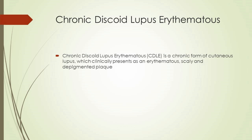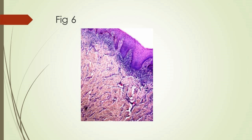Chronic discoid lupus erythematosus (CDLE) is a chronic form of cutaneous lupus presenting as erythematous, scaly, and depigmented plaques. The head and neck area is affected in 41% of all cases. Oral lesions show symmetrical distribution affecting the palate, buccal mucosa, and tongue. The buccal mucosa can be affected in 15% of patients and may transform to leukoplakia. Macroscopic features include hyperkeratosis, degeneration of the basal layer, and subepithelial lymphocytic infiltration. Deep inflammatory infiltration of perivascular orientation distinguishes CDLE lesions from OLPs.